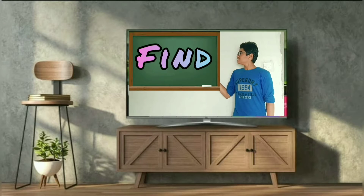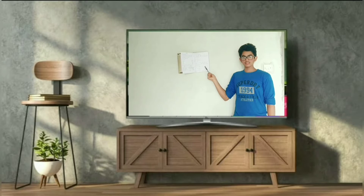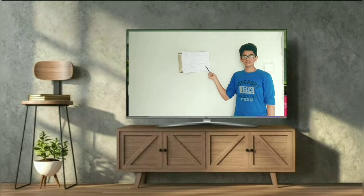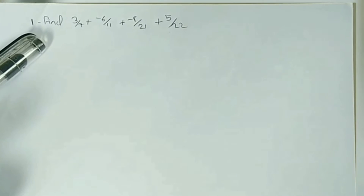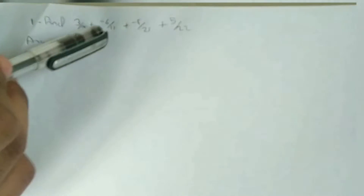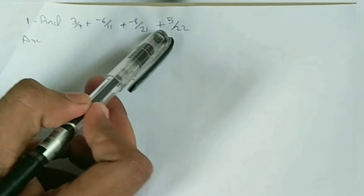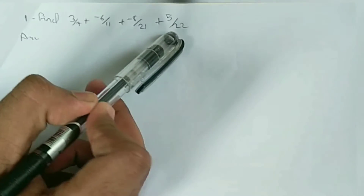Find: 3/7 + (−6/11) + (−8/21) + 5/22. Please read this question carefully. Question number 1: Find 3/7 + (−6/11) + (−8/21) + 5/22.